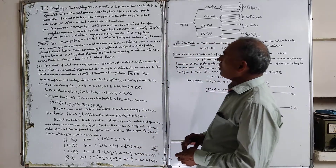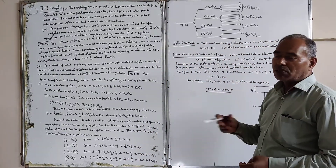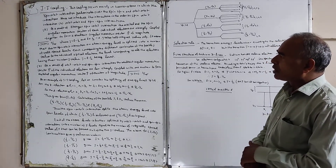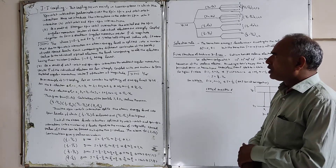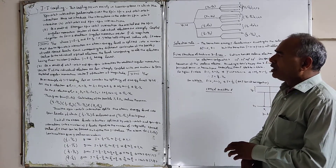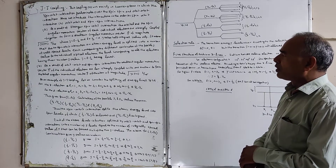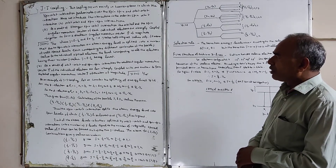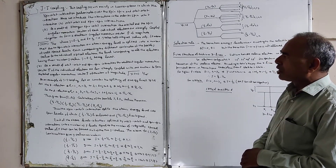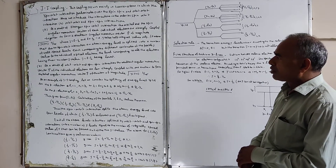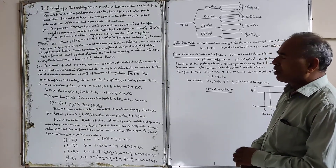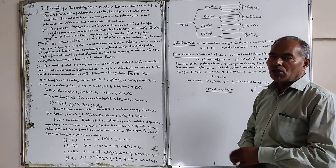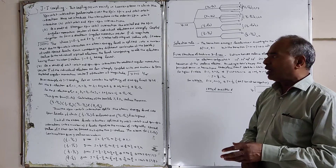Here j takes half integral values only, because of the addition and subtraction of 1/2. Due to the spin-orbit interaction, the atomic energy level is split into a number of well-spaced levels, each corresponding to a different combination of possible values of j. For individual optical electrons, the value j equal to l minus 1/2 is the lowest energy level.